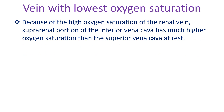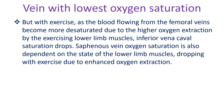Because of the oxygen saturation of the renal vein, the suprarenal portion of the inferior vena cava has much higher oxygen saturation than the superior vena cava at rest. But with exercise, as blood flowing from the femoral veins becomes more desaturated due to higher oxygen extraction by the exercising lower limb muscles, inferior vena cava saturation drops. Saphenous vein oxygen saturation is also dependent on the state of the lower limb muscles, dropping with exercise due to enhanced oxygen extraction.